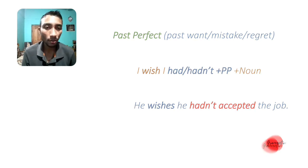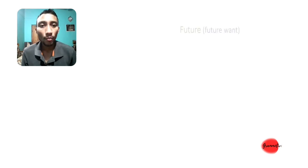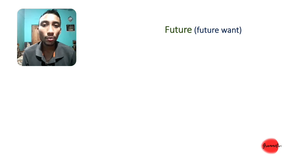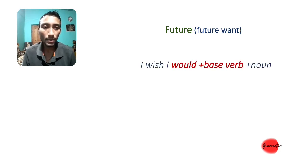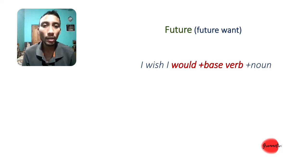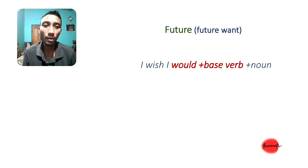Next is the future wish structure. For a future wish, write: subject + wish + subject + would + base verb + noun. This expresses a desire for something to happen in the future.